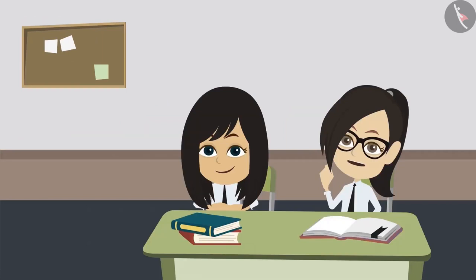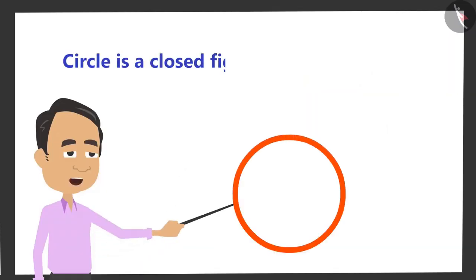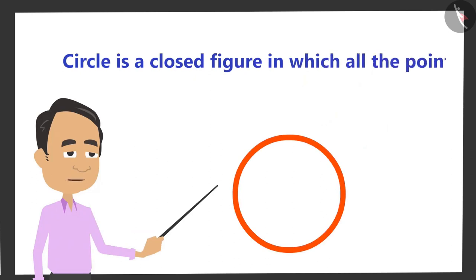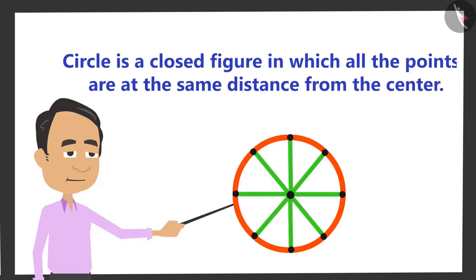If you write properly what you have understood, you will get the definition of a circle. Look, circle is a closed figure in which all the points located in it are at equal distance from the centre.